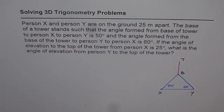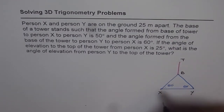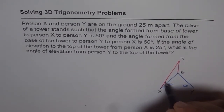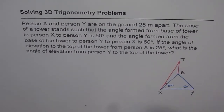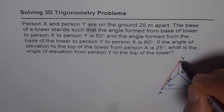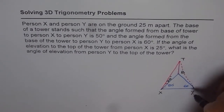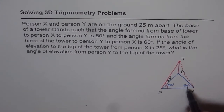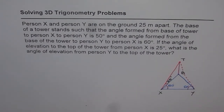What is the angle of elevation from person Y? The angle of elevation will be from X to T in the vertical plane — that angle is given as 25 degrees. What we need to find is the angle of elevation from person Y to the top — let that be angle theta. So we are given 50 degrees which B makes with X, 60 degrees which the base makes with Y, 25 degrees as the angle of elevation from X, and we need to find theta.